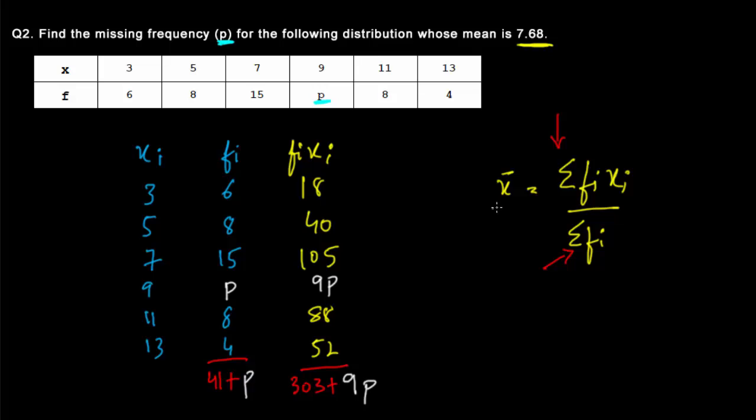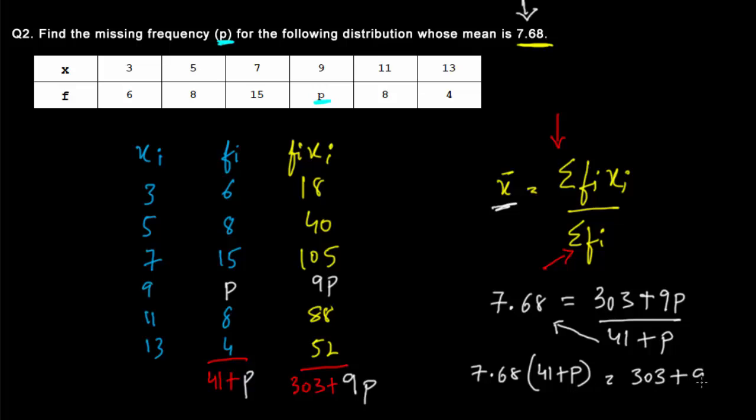Now since x bar is the term given to mean and in this question mean is given as 7.68, we simply replace the value. So it's 7.68 equals 303 plus 9p divided by 41 plus p. Then we cross multiply this denominator with the left hand side. So it's 7.68 times 41 plus p equals 303 plus 9p.